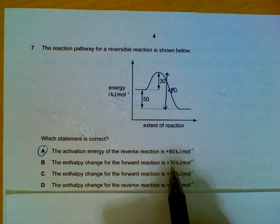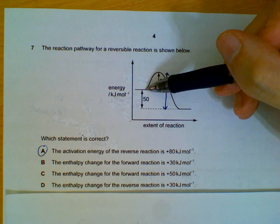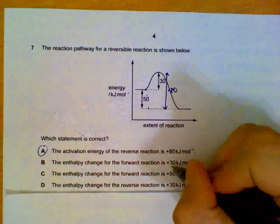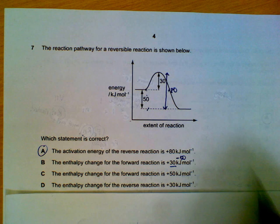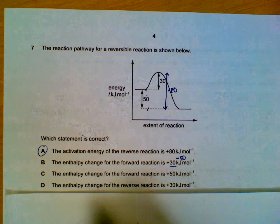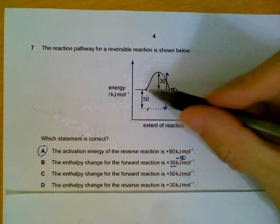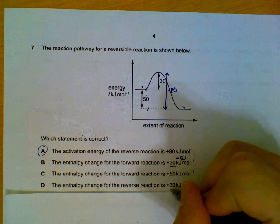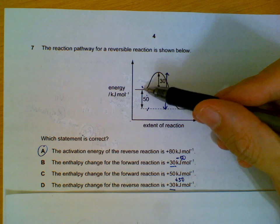Option B states the enthalpy change for the forward reaction is plus 30 — but the energy level drops by 50 to form the product, so the enthalpy change is minus 50, not plus 30. Option C says plus 50 for the forward reaction — also incorrect, it's minus 50 as discussed. Option D says the enthalpy change for the reverse reaction is plus 30 — it's actually plus 50, the amount we have to gain going backwards. So the answer is A.